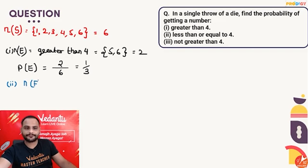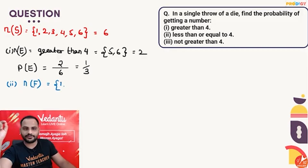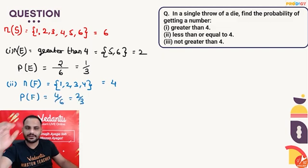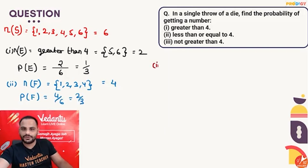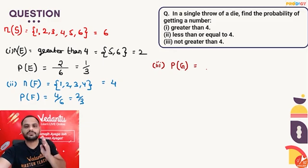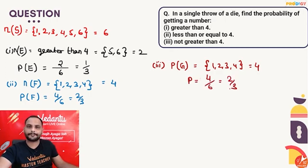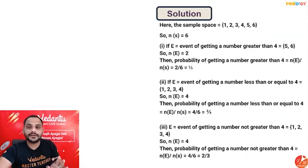For less than or equal to 4: outcomes 1, 2, 3, 4 are favorable — total four outcomes. Probability = 4/6 = 2/3. For not greater than 4: the number should not be greater than 4, so less than or equal to 4 — outcomes 1, 2, 3, 4 are accepted. Probability = 4/6 = 2/3. The second and third events are exactly the same; they are just written in different ways. Reading the question carefully is very important in probability.